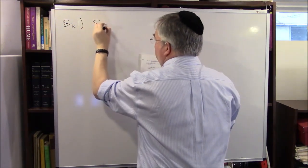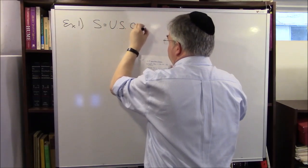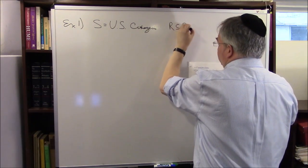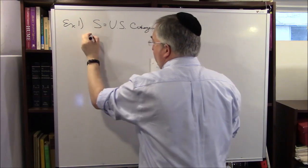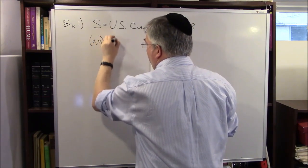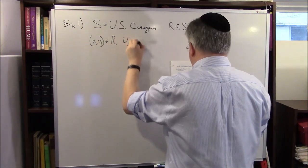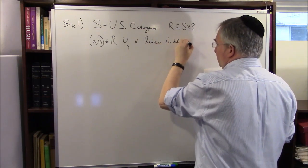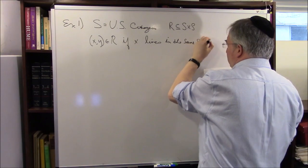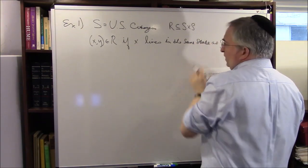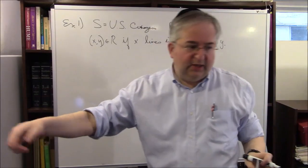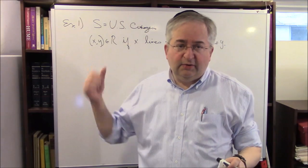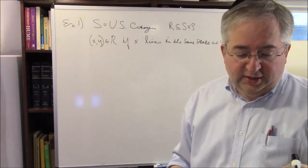Example one: S equals US citizens. R is a subset of S cross S. X comma Y is a member of R if and only if X lives in the same state as Y. So Jack lives in New York, Jill lives in New York — they live in the same state, so they're related. Let's verify it is an equivalence relation.